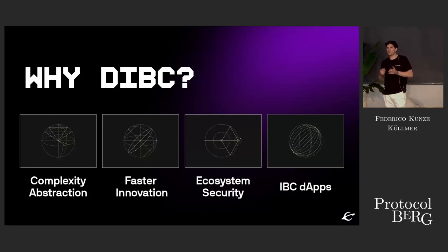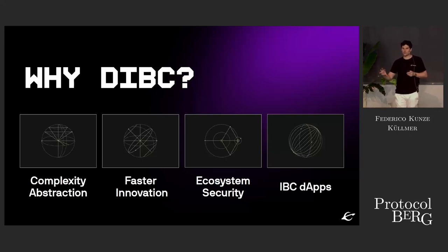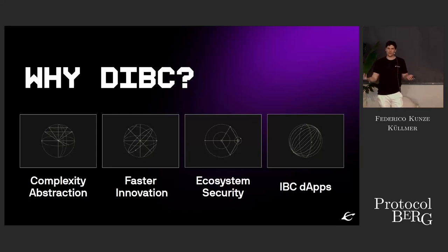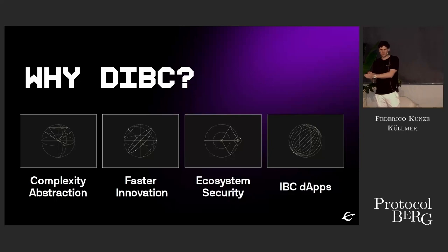Why is Dynamic IBC so game-changing? Why does it create a new wave of composability? It completely abstracts the complexity of the transport, authentication, and ordering parts of the protocol. It creates a faster pace of innovation because now you can create smart contracts that are truly interoperable. It provides ecosystem security that works well in the Cosmos ecosystem with light client verification proofs. And then you can build IBC-enabled decentralized applications.